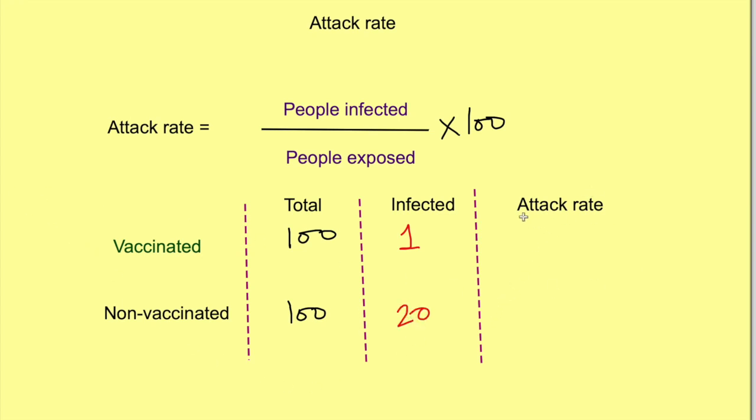We say attack rate in vaccinated group is number of people infected divided by total number of people vaccinated. In this case it will be 1 by 100, while that in non-vaccinated group is 20 by 100.